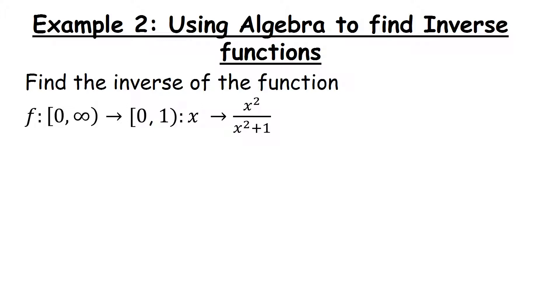This example is using algebra to find the inverse function. We can see this is a little bit more complicated because we have been given here a domain and a range. We've been told the domain, what we put into the x, and the range, what we'll get out in the y. If we ignore that for a second and simply write the function as f of x equals x squared over x squared plus 1, we can proceed as before. First, replace f of x with y.